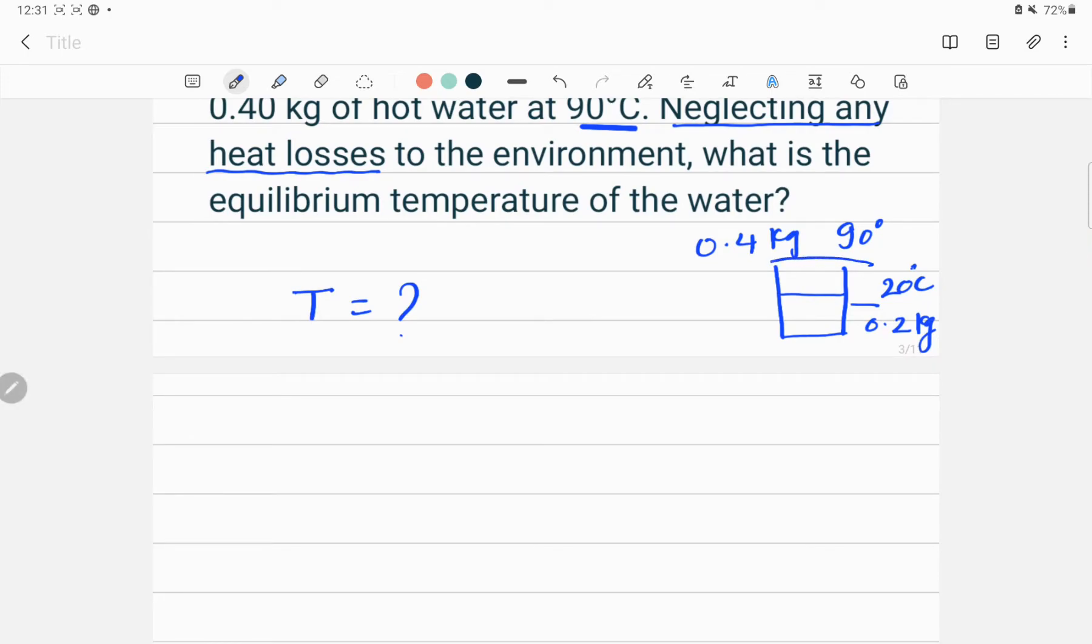According to the principle of calorimetry, if this is the system, glass and water here, if heat is not transporting from this system to the environment or environment to this system, then net heat transferred is zero. That is the principle of calorimetry. So let me write down the principle of calorimetry: the net heat energy transferred is zero.